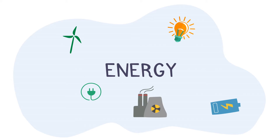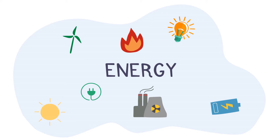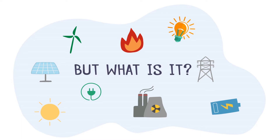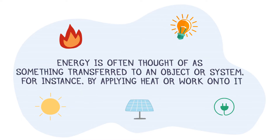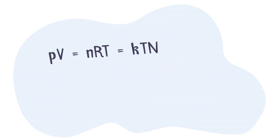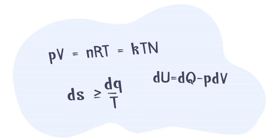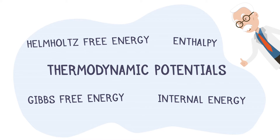Everyone has some intuition regarding energy and understands that without it, there would quite literally be nothing to experience. But what actually is it? Energy can come in various forms and is often thought of as something transferred to an object or system, for instance by applying heat or work onto it. Thermodynamics is the particular field of physics that looks at this relation between the different forms of energy. Thankfully, in the late 19th century, physicists developed several expressions including the thermodynamic potential that nicely encapsulates certain relations.